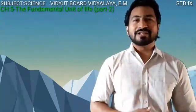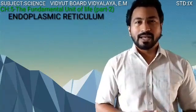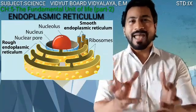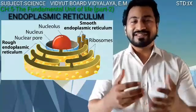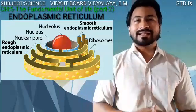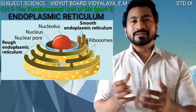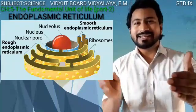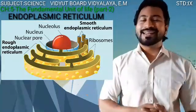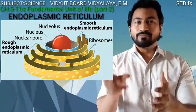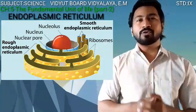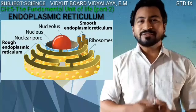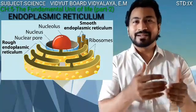The first organelle we shall study is the endoplasmic reticulum. It has tube-like structures and bag-like structures known as vesicles. It is present between the nuclear membrane and the plasma membrane, forming a continuous thread-like structure. If ribosomes are present on the surface of the endoplasmic reticulum, it is called rough endoplasmic reticulum. If ribosomes are absent, those regions are called smooth endoplasmic reticulum.